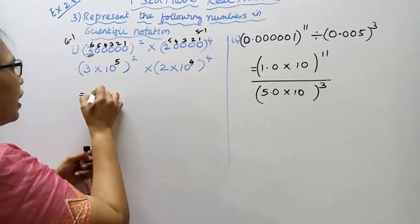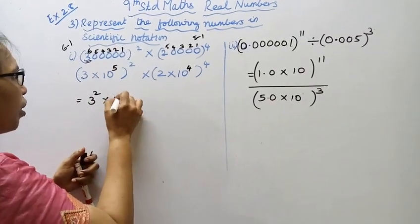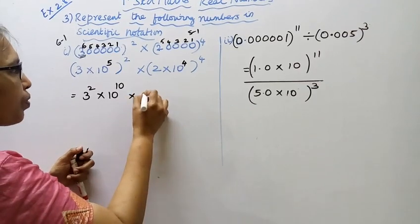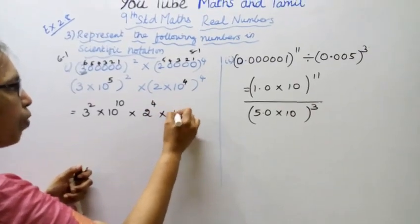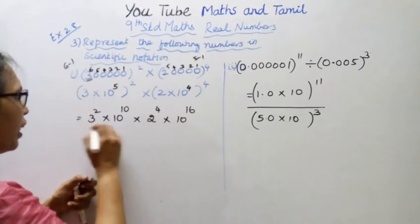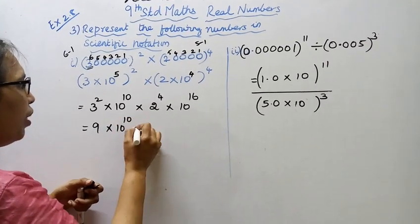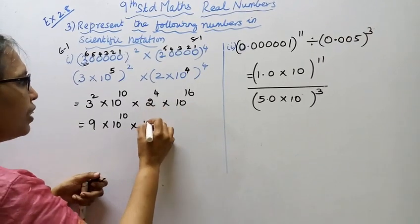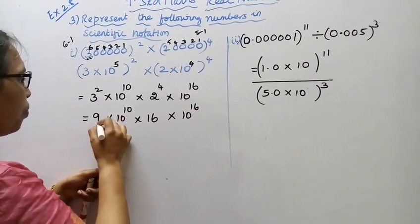Now expanding: 3 squared is 9, into 10 to the power of 5 squared gives 10 to the power of 10. Then 2 to the power of 4 is 16, into 10 to the power of 4 with power 4 gives 10 to the power of 16. So we have: 9 into 10 to the power of 10, multiplied by 16 into 10 to the power of 16.